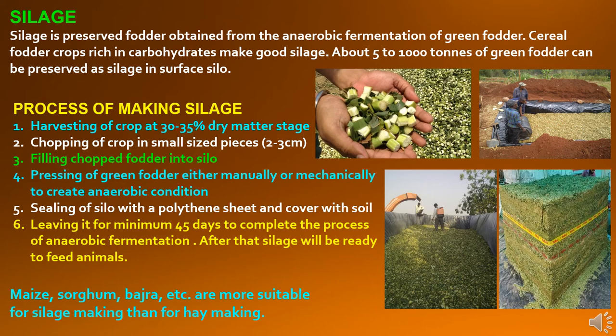Silage is preserved fodder obtained from the anaerobic fermentation of green fodder. Cereal fodder crops rich in carbohydrates make good silage. About 5-1000 tons of green fodder can be preserved as silage in a surface silo. The process of making silage: harvesting of crops at 30-35% dry matter stage; chopping of crops into small sized pieces of 2-3 cm; filling chopped fodder into silo; pressing of green fodder either manually or mechanically to create anaerobic conditions; sealing of silo with a polyethylene sheet and covering with soil; then leaving it for a minimum of 45 days to complete the process of anaerobic fermentation. After that silage will be ready to feed animals. Maize, sorghum, bajra etc. are more suitable for silage making than for hay making.